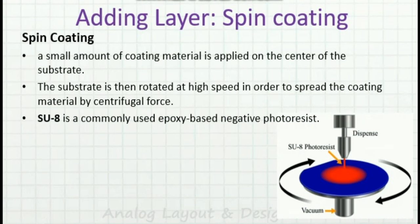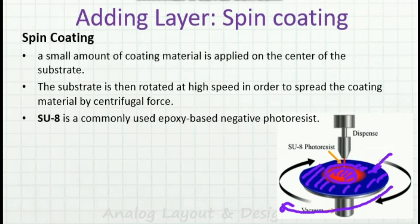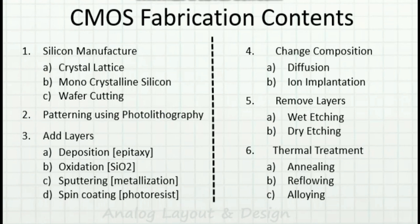Another way of adding a layer is spin coating. The coating material is applied at the center of the wafer, then the wafer is rotated at very high speed. Because of the centrifugal force, the material at the center gets deposited uniformly over the entire wafer. Generally, SU-8, which is a commonly used epoxy-based negative photoresist, is coated on the wafer using this spin coating method.